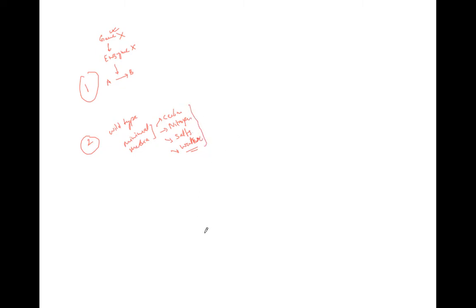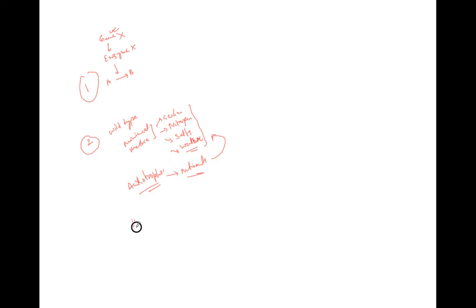However, there are some auxotrophs — these are organisms that require a particular nutrient supplemented in the minimal media in order to grow. For example, a histidine auxotroph will require histidine added to the media to grow.